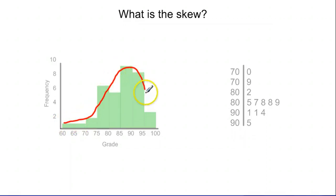So if I were to smooth it out in my head, it's going to look something kind of like this. And I see that I have a lot of my data off to the right and then I have this little tail that kind of heads over to the left. So this graph would be skewed left.